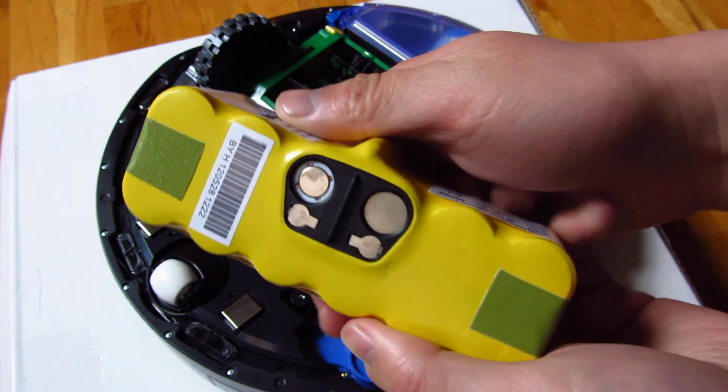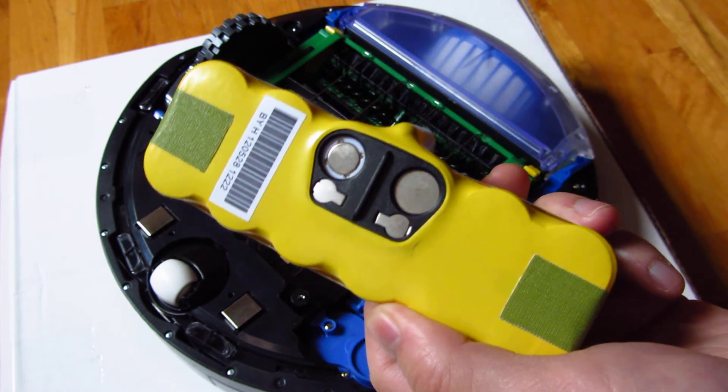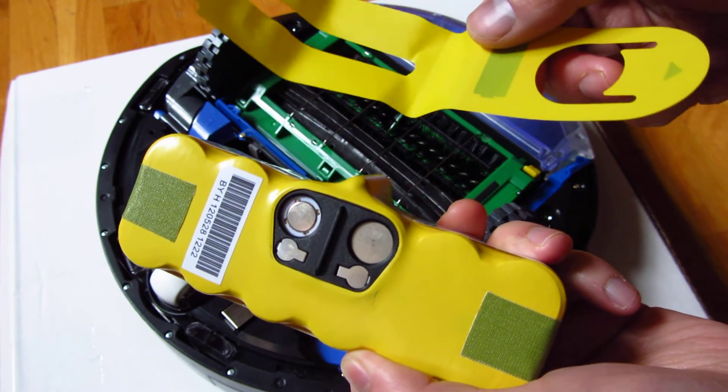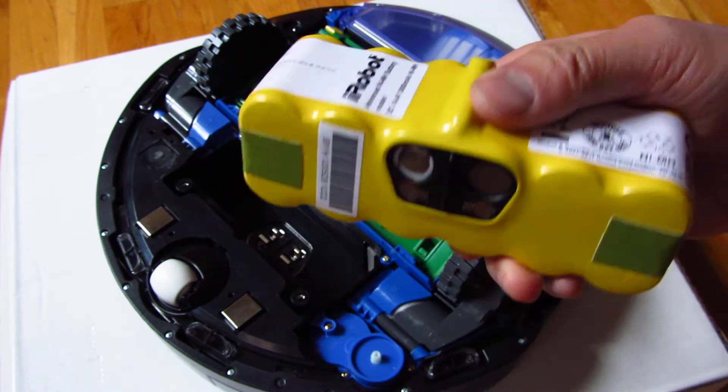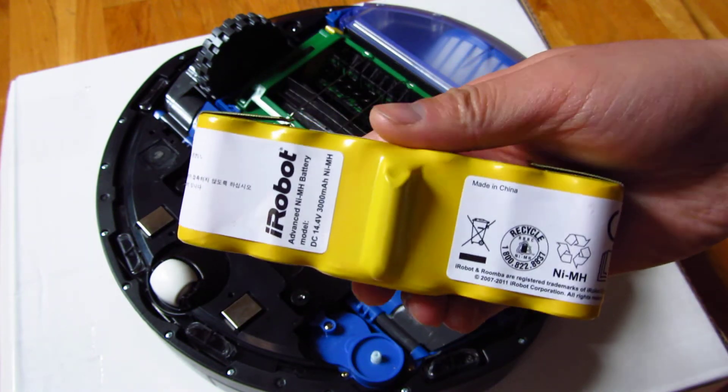Lots of times I like taking the battery out because they have some sticky stuff here that keeps this in place, and it's blocking the contacts. This is the Roomba battery.